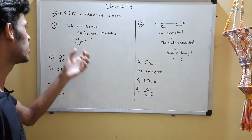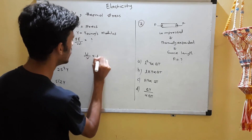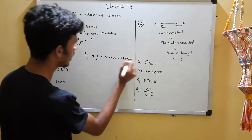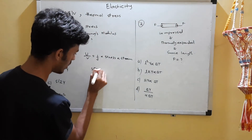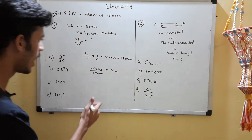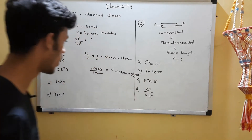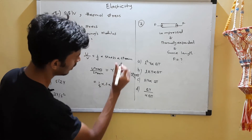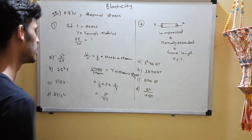Final questions on potential energy. Question one: given stress S and Young's modulus Y, find the potential energy per unit volume. The formula is half stress times strain. Since stress/strain = Y, we have strain = S/Y. Substituting: PE per unit volume = (1/2)·S·(S/Y) = S²/(2Y). Option A, S²/(2Y), is the correct answer.